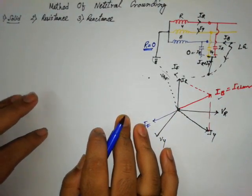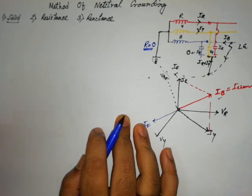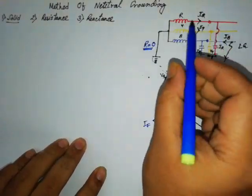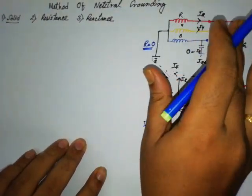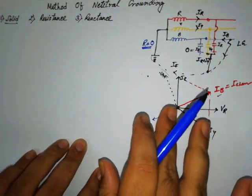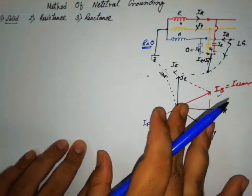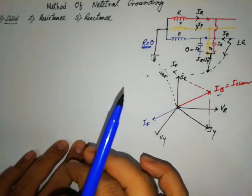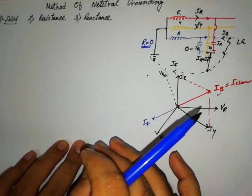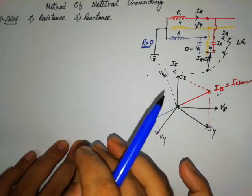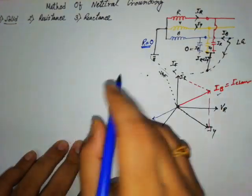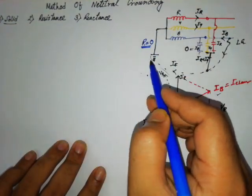What are the advantages of a solidly grounded system? First of all, there is no chance of increment of the phase voltage — that is the main advantage. Now, there is also a disadvantage of the solidly grounded system. The disadvantage is that due to the flow of heavy fault current, this path may get damaged, because it will allow a huge fault current. As the fault current will face zero resistance path, it will try to flow as much as possible.